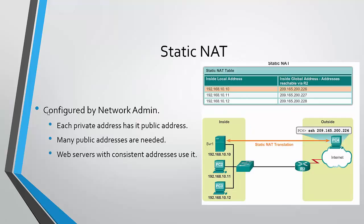There are several types of NAT. The first one is static NAT. It is configured by the network admin and each private address has its own public address — no public address has two private addresses or vice versa. Many public addresses are needed, and web servers with consistent addresses commonly use it. As we can see in the static NAT table, each inside local address has its own inside global address. This means for every device connected to the inside network, we have to have a public address available — it's a one-to-one ratio.